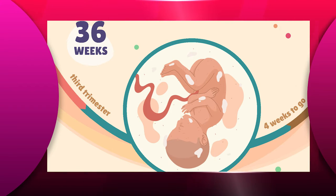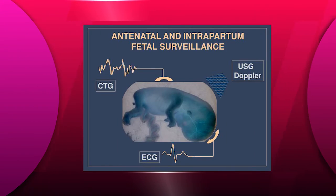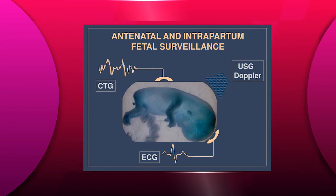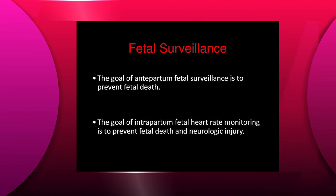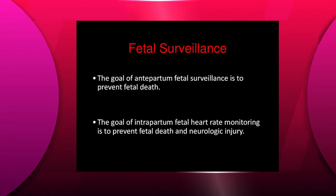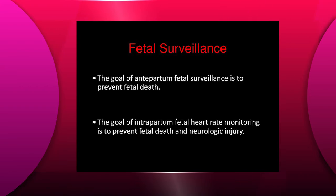So why is this process so important? Fetal heart monitoring is a way to check the heart rate of your baby, and the heart rate is a good way to find out if your baby is doing well. The primary objective of fetal surveillance is to prevent antenatal fetal deaths, which still account for greater than one half of perinatal mortality.